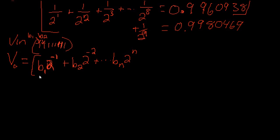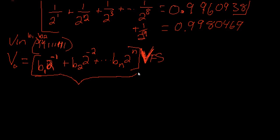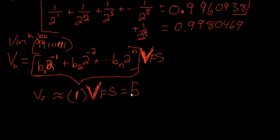And this is going to be some fraction that we multiply times our full-scale voltage, V_FS. So, if we apply this word of all 1s — B1 is 1, B2 is 1, B3 is 1, and so on — this term approaches 1, so we just call it 1. For this signal, this whole expression is approximately 1, and V_out equals approximately 1 times our full-scale voltage. We know our full-scale voltage is 5, so this comes out to 5 volts — exactly what we expected.